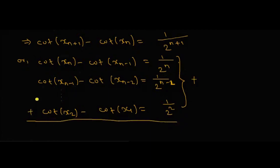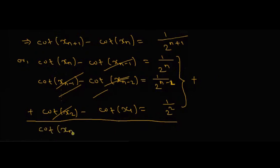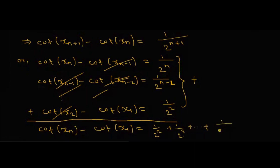This is a telescoping sum — you can see that terms cancel: this will be cancelled, this term will be cancelled, everything will be cancelled. Therefore cot(x_n) − cot(x₁) = 1/2² + 1/2³ + … + 1/2^n.